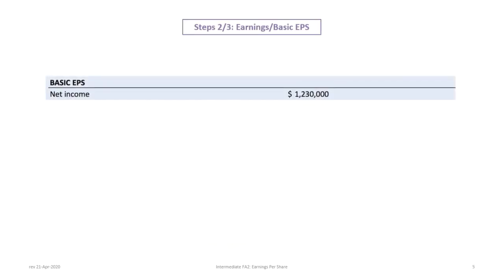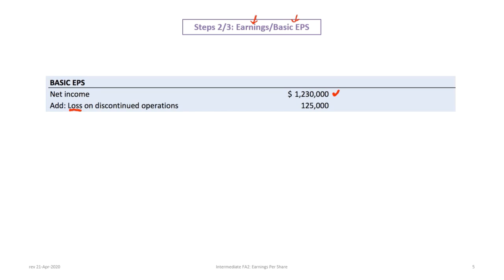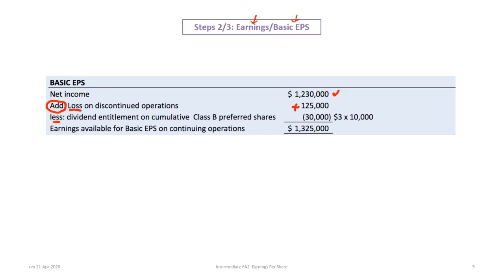Next, we calculate basic EPS in steps two and three — the earnings for basic EPS, then the basic EPS itself. We start with net income. There are discontinued operations in this problem — specifically a loss on discontinued operations of $125,000. We add back the loss on discontinued operations because we want EPS from continuing operations. If there were a gain on discontinued operations, we would subtract it.